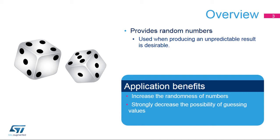The Random Number Generator or RNG integrated inside STM32 products provides random numbers which are used when producing an unpredictable result is desirable. Applications can benefit from the RNG to increase the randomness of numbers or to decrease the possibility of guessing certain values.